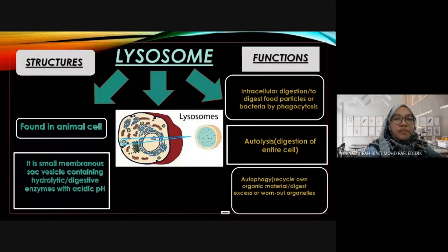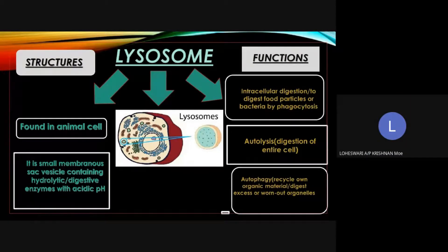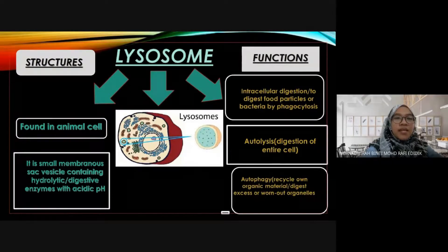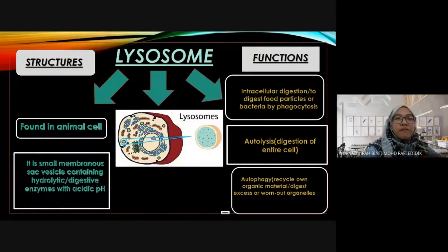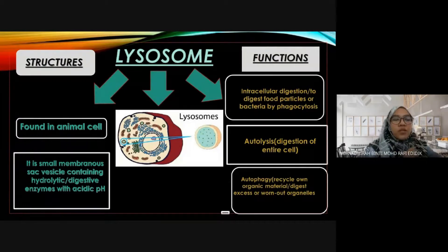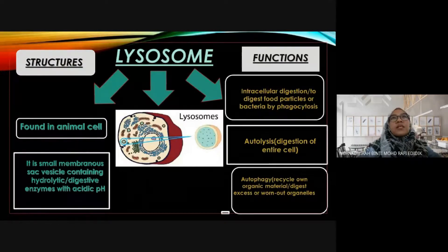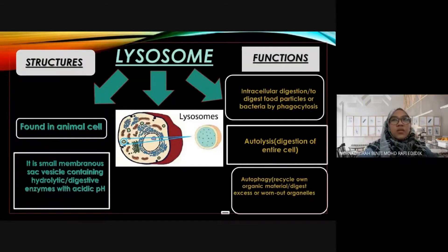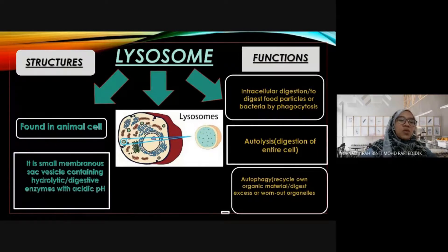The teacher explains phagocytosis: the cell will engulf external materials — bacteria or food particles — from outside into the interior. For example, food like rice (starch) is broken down into glucose, partly by lysozyme. Similarly, harmful bacteria that you are exposed to are broken down inside the cell by lysozyme. The lysozyme itself undergoes the breakdown of bacteria.